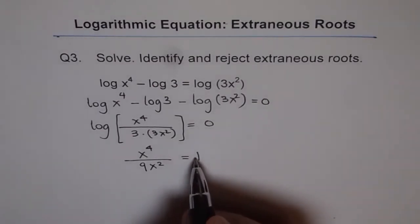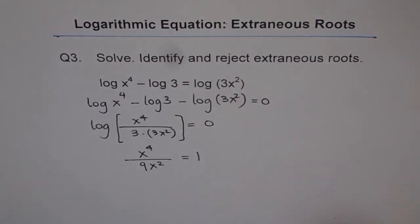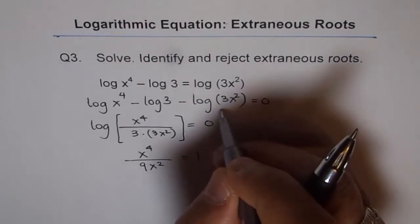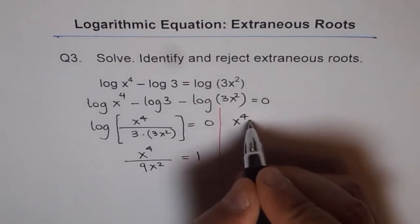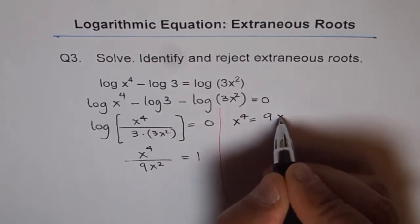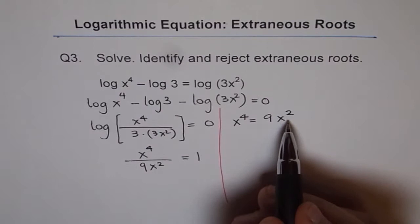Now we can cross multiply and then solve this equation. So we have, let's do it here on the right side of the page. So we can do x to the power of 4 equals to 9x squared. So we'll bring the terms together.